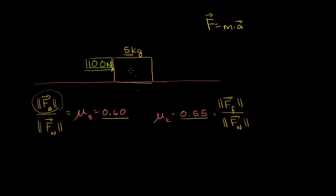The force of gravity on this block is the gravitational field — 9.8 meters per second squared — times 5 kilograms, giving us 49 newtons downward. That's the magnitude of the force due to gravity, directed straight down toward the center of the Earth. The block is not accelerating downward, so the normal force must completely balance gravity, acting at 49 newtons upward. These forces net out, which is why the block doesn't accelerate vertically.